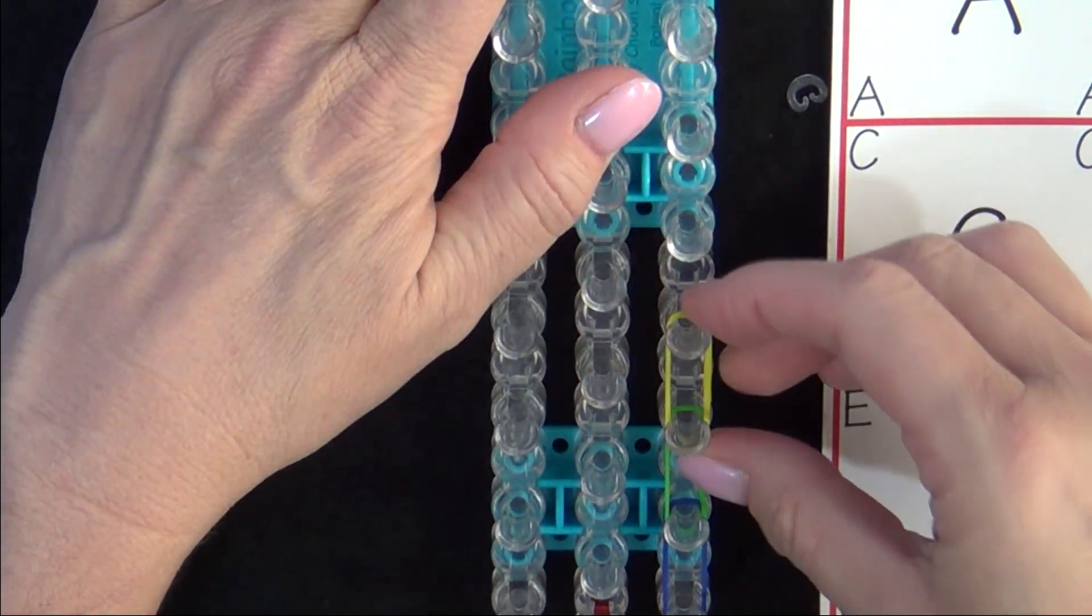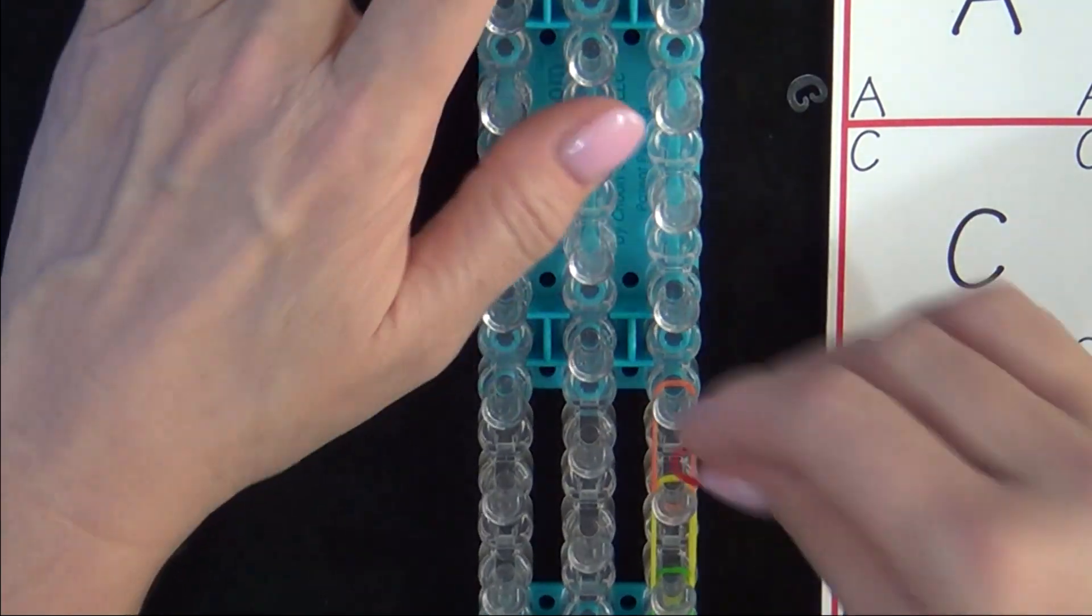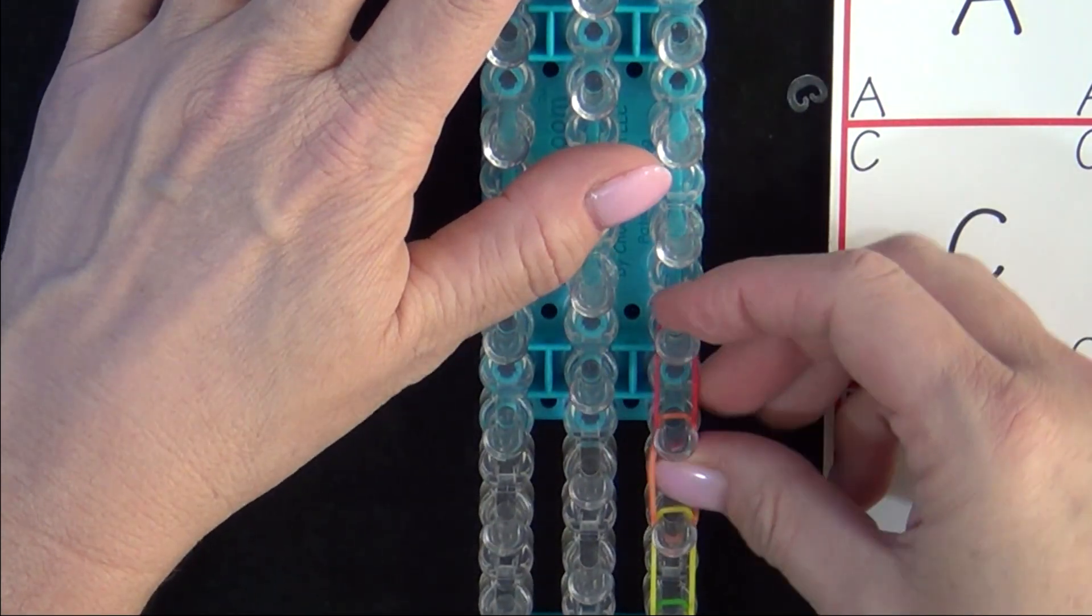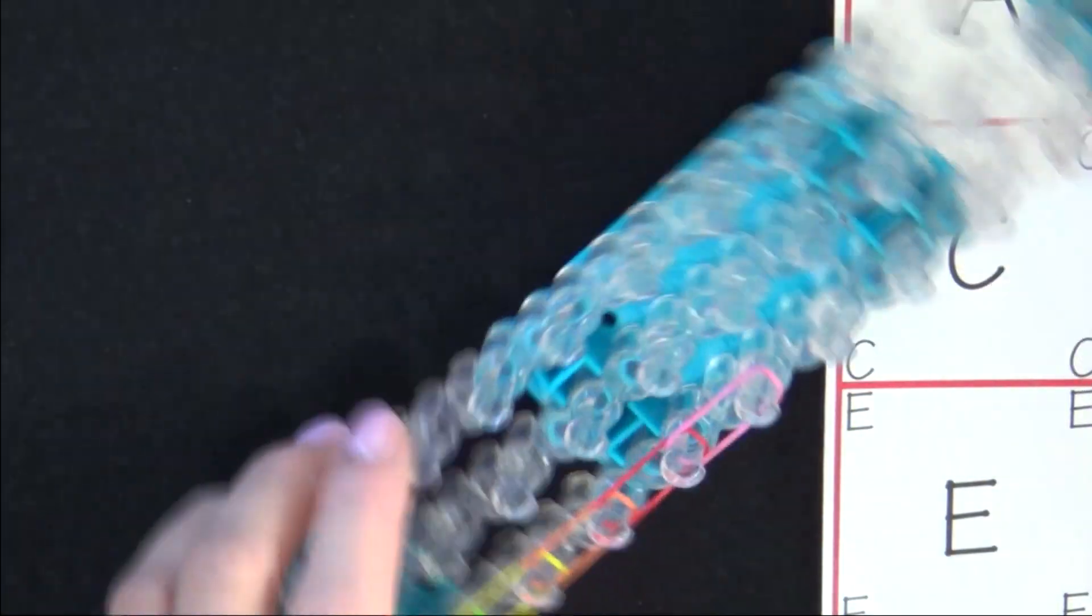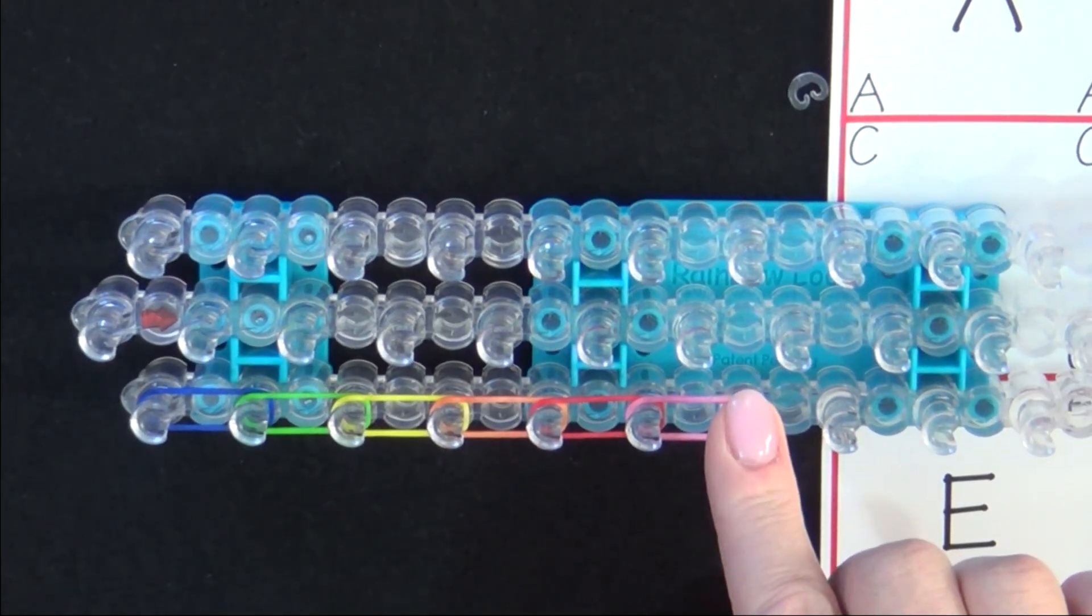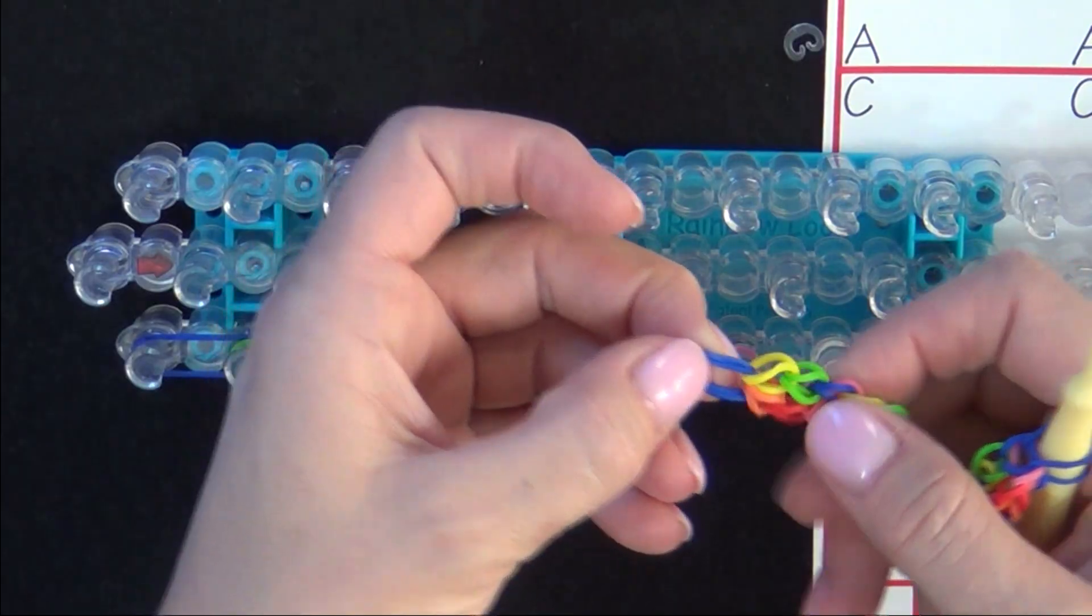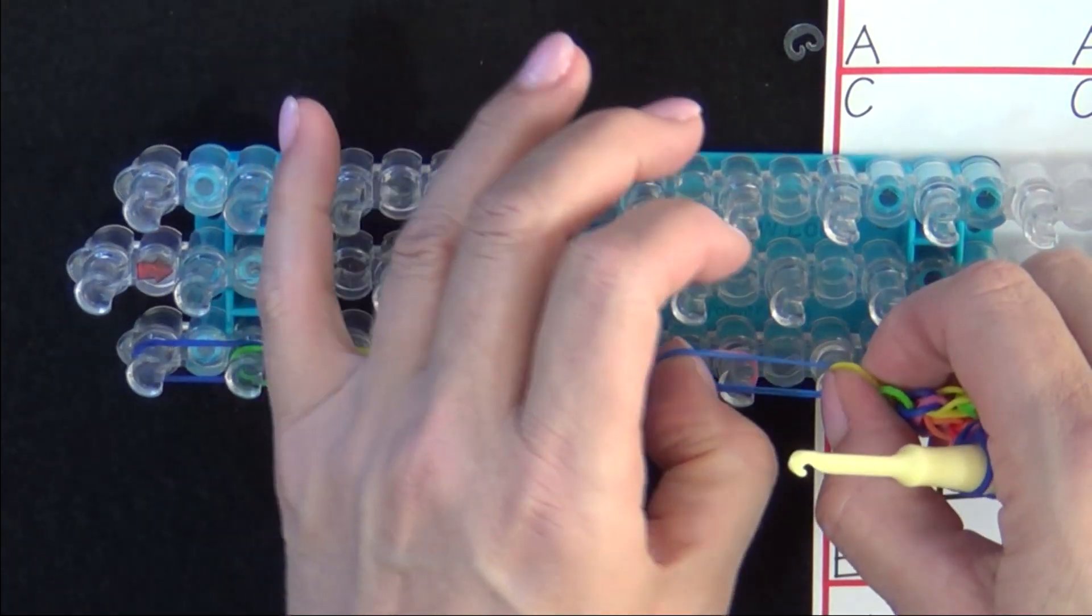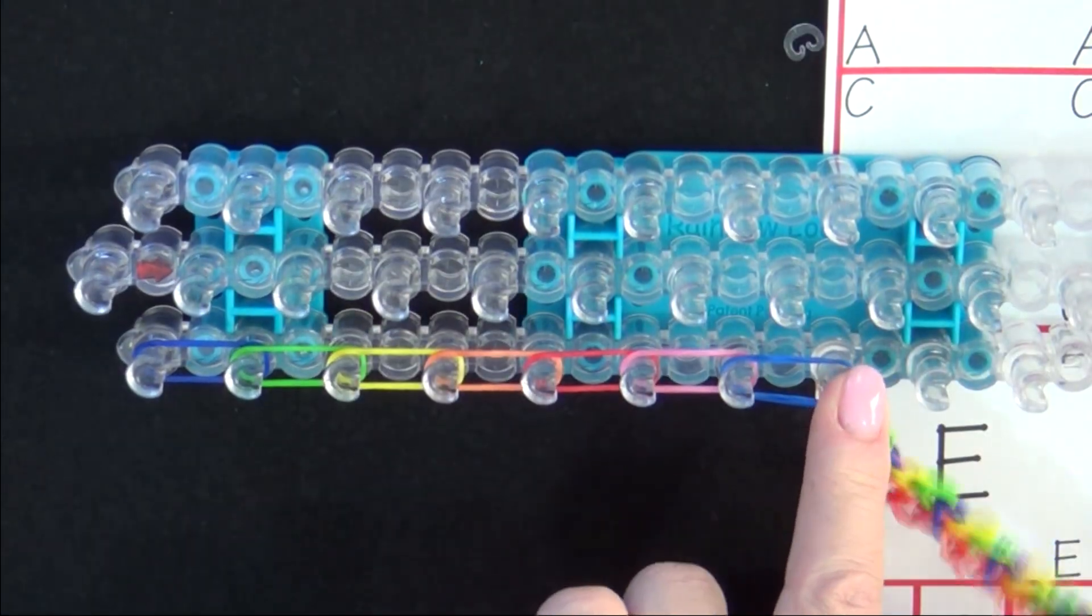You place each one of the bands one over the other in a single chain going up the side of the loom. And then once you've placed the number of bands that you need, you'll place the cap band from your bracelet on this last pin. You locate the cap band at the end of your bracelet. And then you stretch that over the last pin and to the one right behind it.